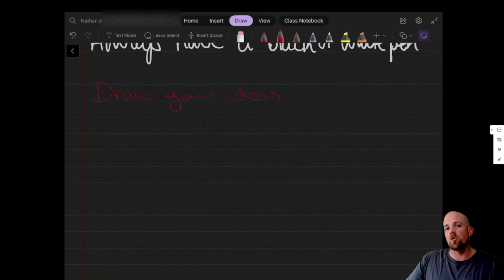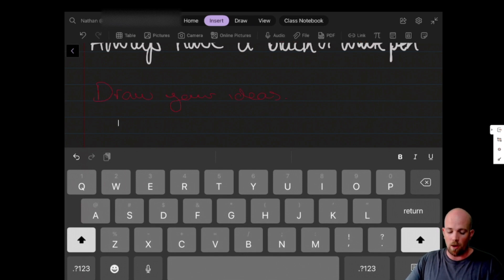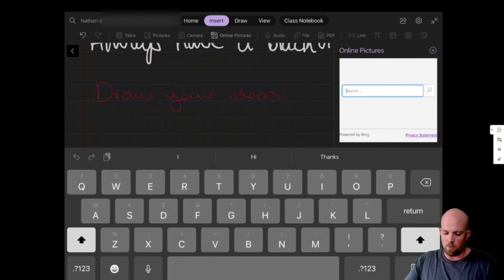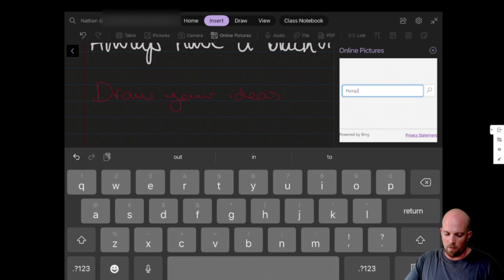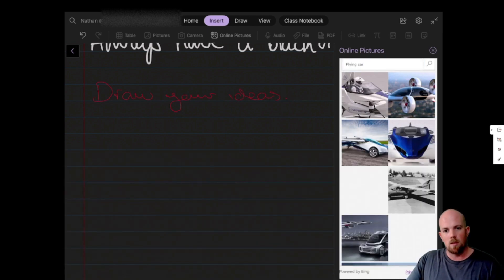My last tip is always try to encourage students to draw their ideas. And this may take a little bit of time. Start them off by tracing over pre-existing images. So I might decide to come in to insert. And on the iPad we know that we can do online pictures. And so let's say I was thinking of a concept like a flying car and I wanted to sketch that onto the page. I can use these images and place them on.